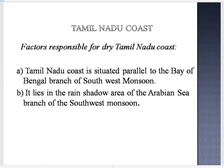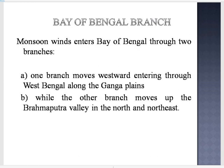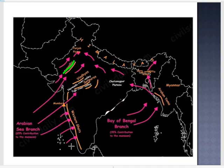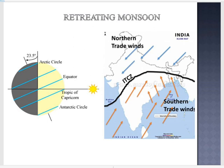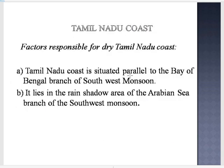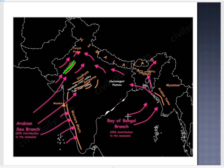It is important to understand why the Tamil Nadu coast does not receive significant rainfall from the southwest monsoon. First, the Tamil Nadu coast is situated parallel to the Bay of Bengal branch of the southwest monsoon. Second, it lies in the rain shadow area of the Arabian Sea branch. By the time the Arabian Sea branch reaches this area, the moisture content has significantly reduced, resulting in less rainfall.